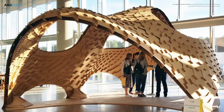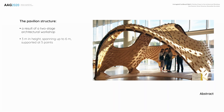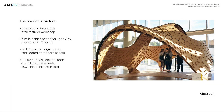The corrugated cardboard pavilion is the result of a two-stage architectural workshop. The shell is three meters in height, spanning up to six meters, and is supported at five points. The pavilion was built from three-millimeter corrugated cardboard sheets and consists of 391 sets of planar quadrilateral elements — 1,537 unique pieces in total.